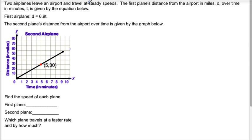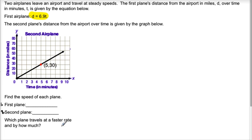Two airplanes leave an airport and travel at steady speeds. The first plane's distance from the airport in miles, D, over time in minutes, T, is given by the equation: D equals 6.9T. The second plane's distance from the airport over time is given by the graph below. So very similar to our last example. Find the speed of each plane, and then which plane travels faster and by how much.